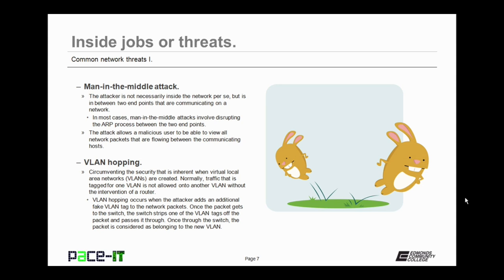Then there's VLAN hopping — circumventing the security that is inherent when virtual local area networks are created. Normally traffic tagged for one VLAN is not allowed onto another VLAN without the intervention of a router. VLAN hopping occurs when the attacker adds an additional fake VLAN tag to the network packets. Once the packets get to the switch, the switch strips one of the VLAN tags off the packet and passes it through, and the packet is then considered as belonging to the new VLAN, thus bypassing the security inherent in VLANs.